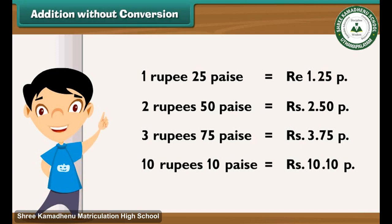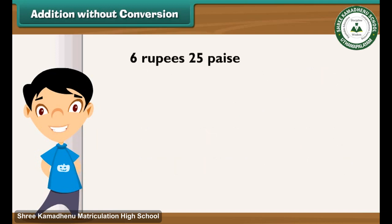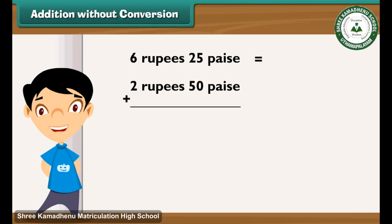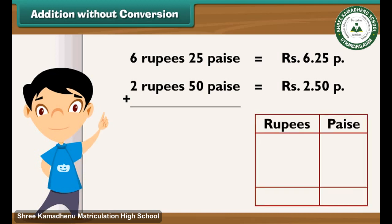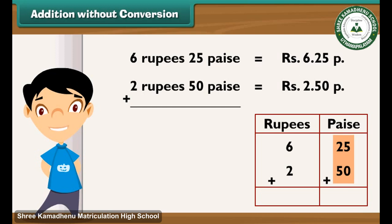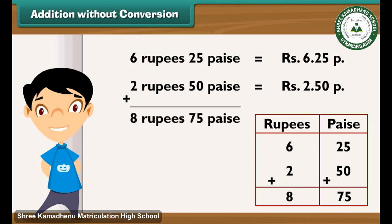Let us now perform additions without any conversions. Let's add 6 rupees 25 paise and 2 rupees 50 paise. First, write 6 rupees 25 paise as ₹6.25p. Just below it, write 2 rupees 50 paise as ₹2.50p, so that the rupee part falls in the rupee column and the paise part falls in the paise column. Step 1: Add the numbers in the paise column — 25 plus 50 is equal to 75. Write 75 in the paise column. Step 2: Add the numbers in the rupees column — 6 plus 2 is equal to 8. Write 8 in the rupees column. The result of the addition is 8 rupees 75 paise.